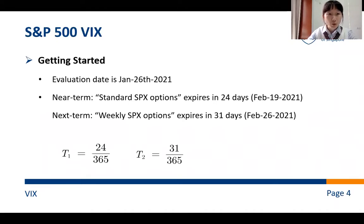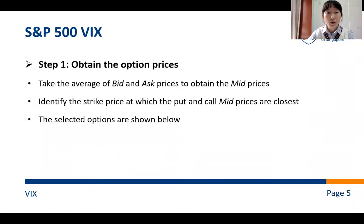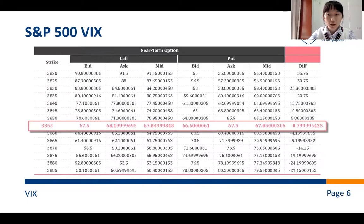We need to choose options which expire on the near term and the next term. Next, we take the arithmetic average of the bid and ask prices to obtain the mid price, which serves as the option price. After that, we need to identify the strike price at which the put and call mid prices are closest. The strikes we decided to choose are highlighted.